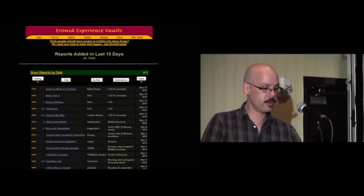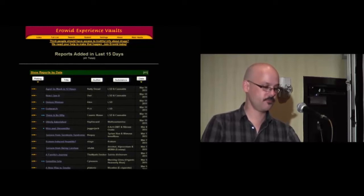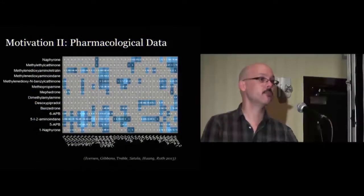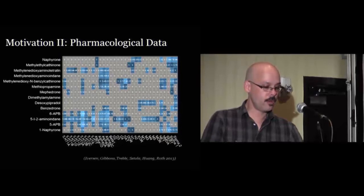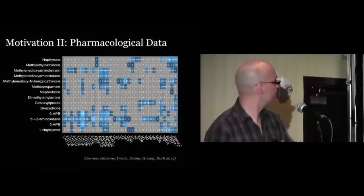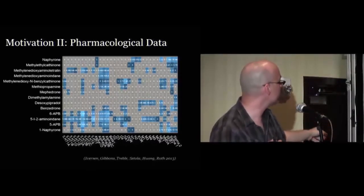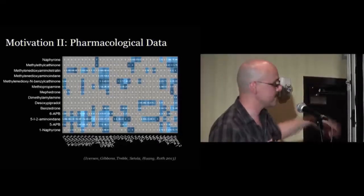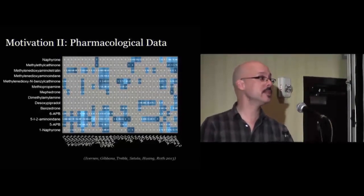There are simply too many reports to read at this point — just one screen of Arrowhead shows thousands of reports. A second motivation is that we're accumulating more data on what these compounds do pharmacologically. An image from a recent paper shows binding of about 15 different compounds at around 20 different receptors, where rows are compounds, columns are receptors, and color indicates binding strength. Wouldn't it be great if we could combine these two things?